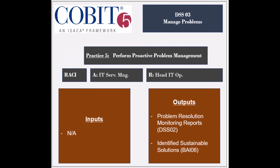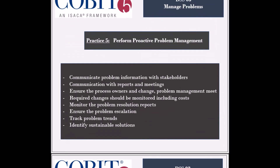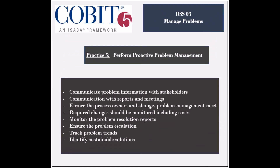The fifth and last practice is to perform proactive problem management. The entity responsible is the Head of IT Operations, and the entity that is held accountable is the IT Service Manager. The practice receives no inputs, but generates two outputs, which are the problem resolution monitoring reports to be used by the DSS-II process, and the identified sustainable solutions to be used by the BAI-6 process.